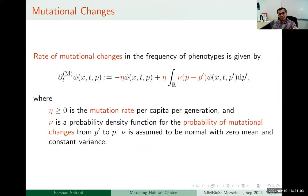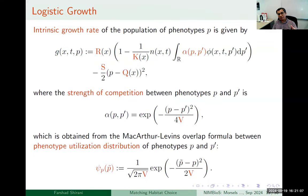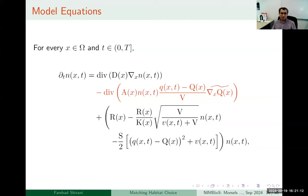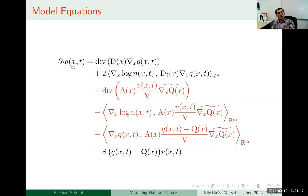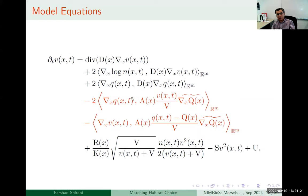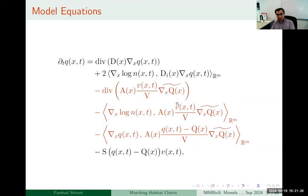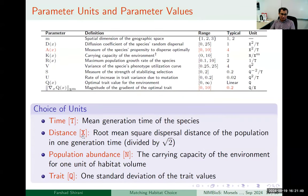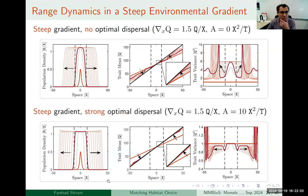Plugging in these components into the basic equation and taking the first and second moments, we find equations for the evolution of density, mean trait value, and trait variance. The terms highlighted in orange are the effects of matching habitat choice — these effects show up in different ways in the core versus the periphery of the population. We adjusted the units and parameter ranges to be biologically realistic before analyzing the results.